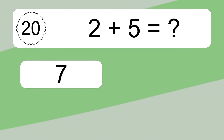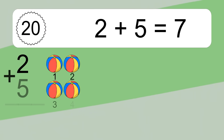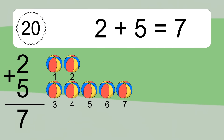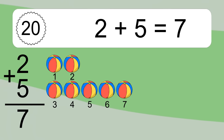2 plus 5 equals what? 2 plus 5 equals 7. Let's count it. 1, 2, 3, 4, 5, 6, 7.